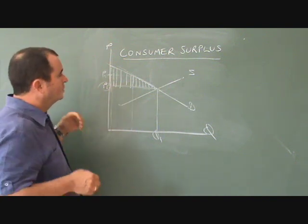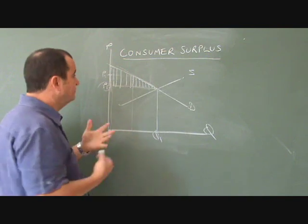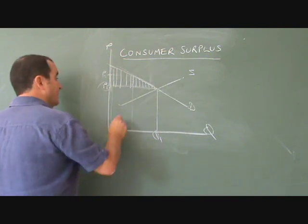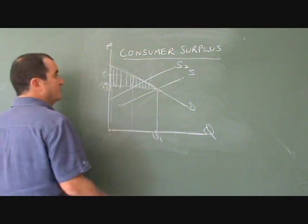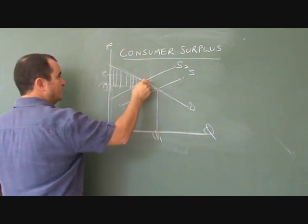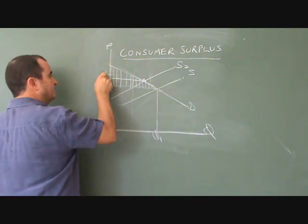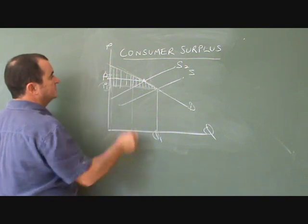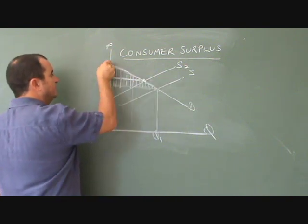Now, consumer surplus can change. If there's a rise in the cost of production and the supply curve shifts up to S2, the new equilibrium price will be this price, let's call it P2, and you can see that the consumer surplus has shrunk to this area.